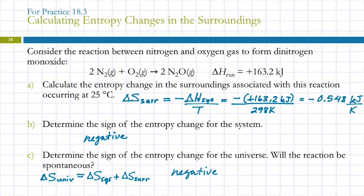Can the answer stay in kilojoules per Kelvin? Yes, it can. Joules per Kelvin is typically more useful because a lot of these entropy changes are actually quite small, so joules per Kelvin works out pretty nicely. We typically express delta H in kilojoules because it's nicer to say 163 rather than 163,000. That's why we have different-sized units.